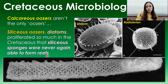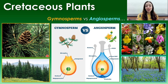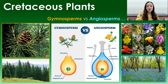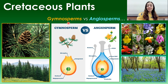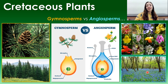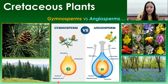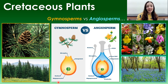Moving on to macro life, we'll start with plants, because there was a major change in plant evolution during the Cretaceous: the evolution of angiosperms. Angiosperms are flowering plants. The major difference between angiosperms and the gymnosperms that came before them is that gymnosperms — 'naked seed plants' — had naked seeds that weren't enclosed like angiosperm seeds. Angiosperms not only evolved in the Cretaceous but diversified rapidly and dominated much of the terrestrial environment, though gymnosperms also continued to thrive.